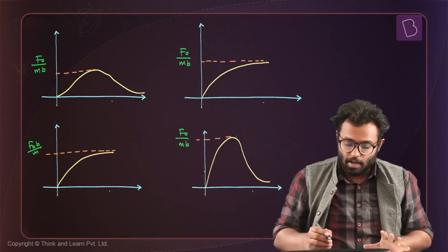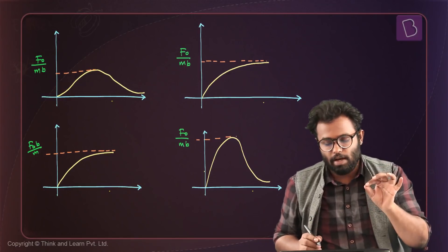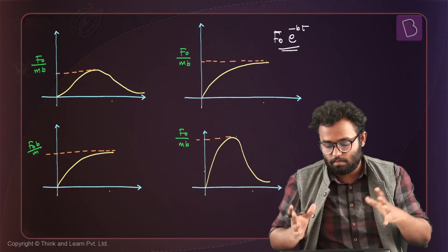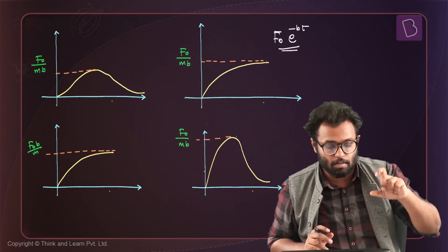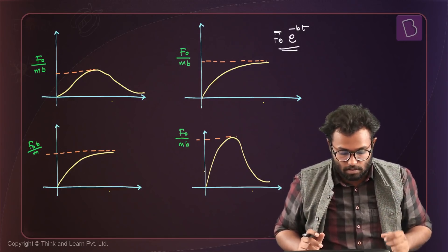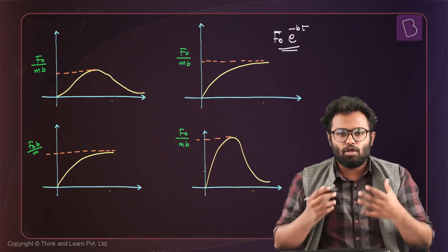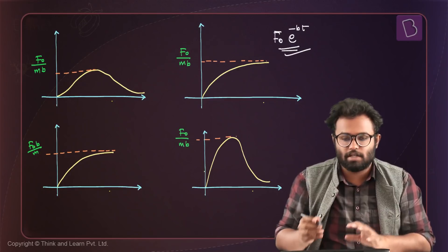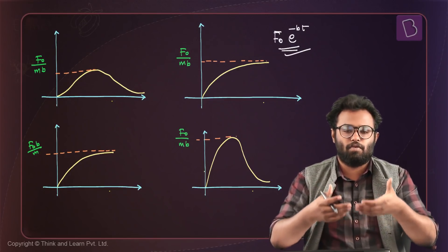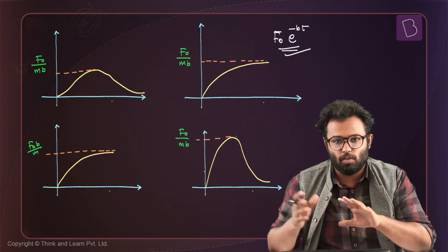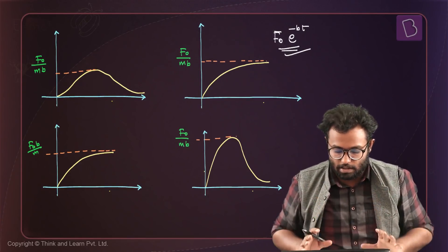There's a problem where something is at rest and there's a force F₀e^(-Bt). We have to find which of the curves represents the velocity. I could solve this by finding the acceleration — dividing the force by mass — and then finding the expression for velocity by integrating, using dv/dt = a.